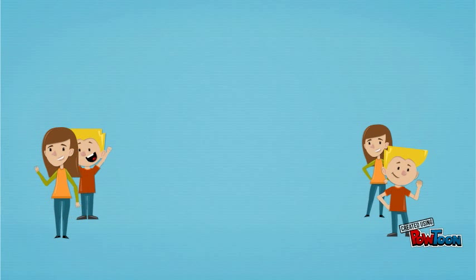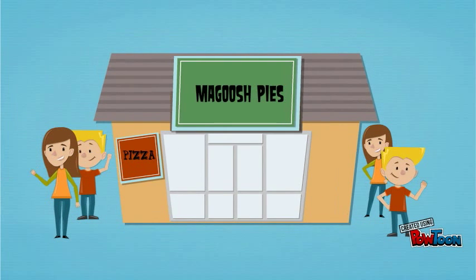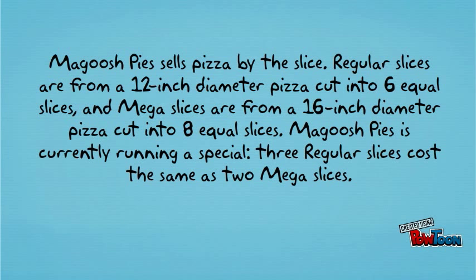A group of very hungry students is gathered after school at Magoosh Pies, the tastiest pizza joint in town. Magoosh Pies sells pizza by the slice. Regular slices are from a 12 inch diameter pizza cut into six equal slices, and mega slices are from a 16 inch diameter pizza cut into eight equal slices. Magoosh Pies is currently running a special: three regular slices cost the same as two mega slices.